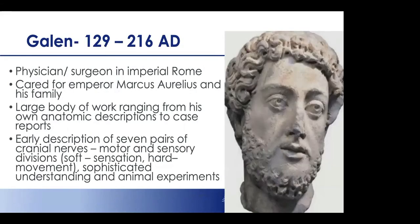Galen was a physician-surgeon in imperial Rome and caretaker for Emperor Marcus Aurelius. An interesting aside: Marcus Aurelius was the first emperor to leave the empire to his children. Unfortunately one son died at age seven after surgery to treat a tumor beneath his ear, leaving the other son Commodus as sole ruler — known as one of the worst Roman emperors in history for his debauchery. This botched ear surgery may have been partly responsible for the downfall of Rome.